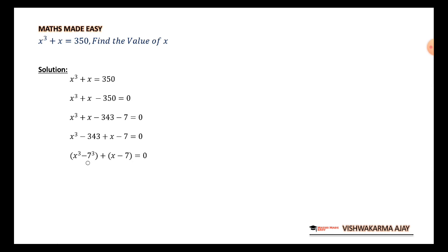Now, if you see this part, we can apply the formula of a cube minus b cube. That is, a minus b in the bracket a square plus ab plus b square. You can also write it as a square plus ab plus b square. Both are same.